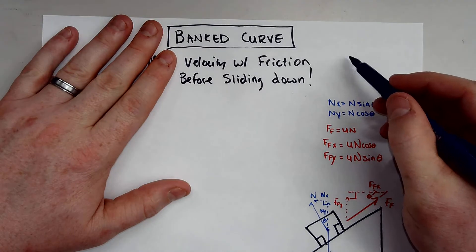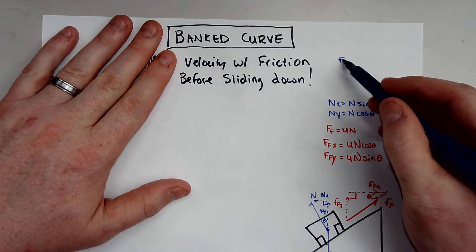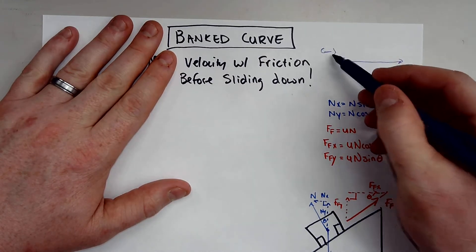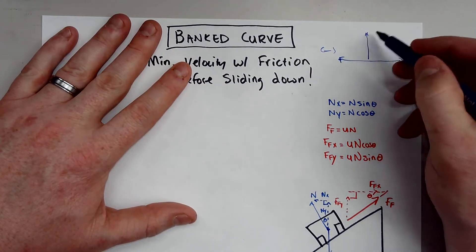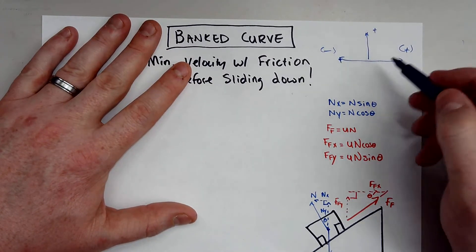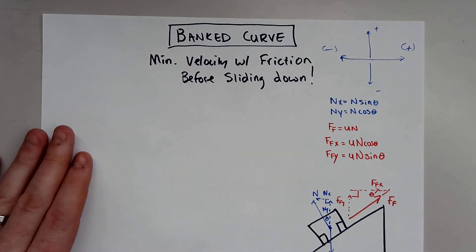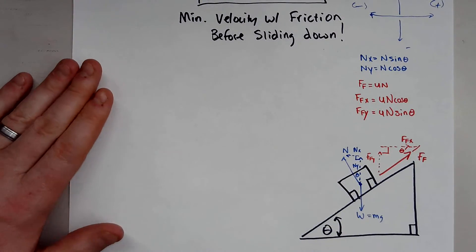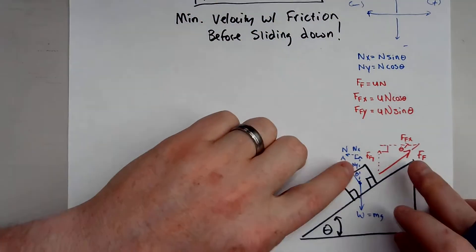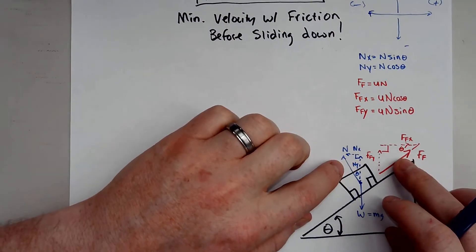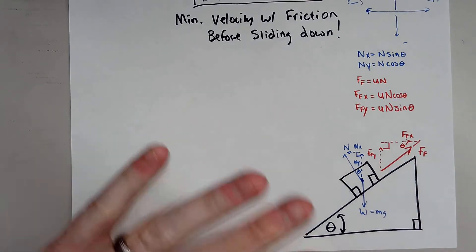Now we need to define directional components for our vectors. Anything going to the left is negative, anything going to the right of the ramp is positive, anything going up is positive, and anything going down the ramp is negative — a typical coordinate system. With that, you can understand the friction and normal force components and break this problem into pieces.